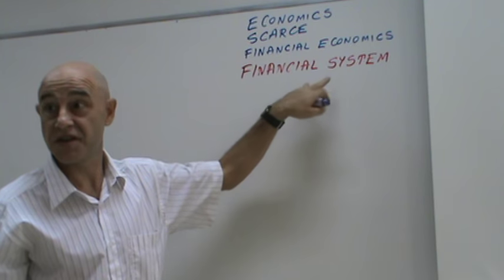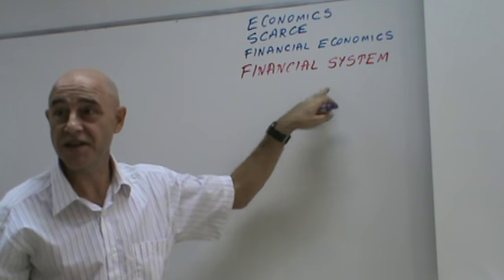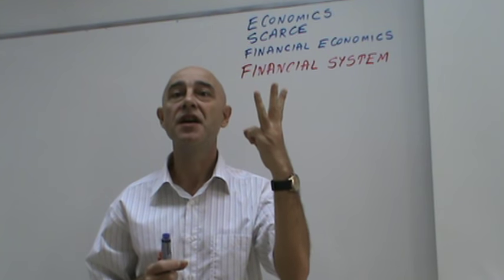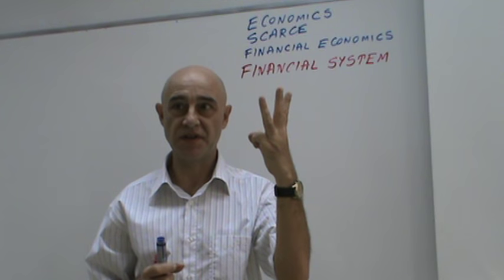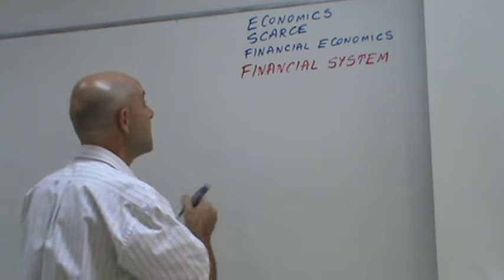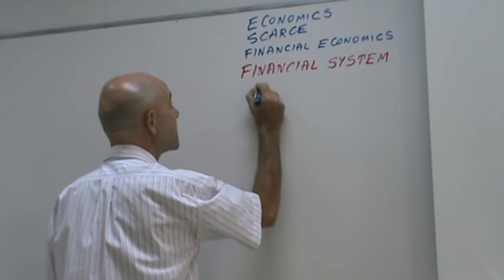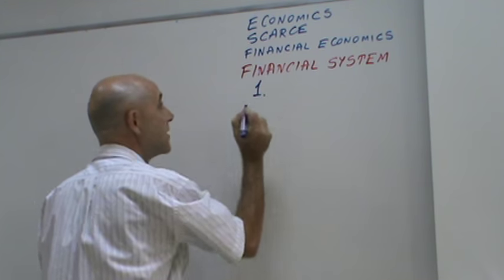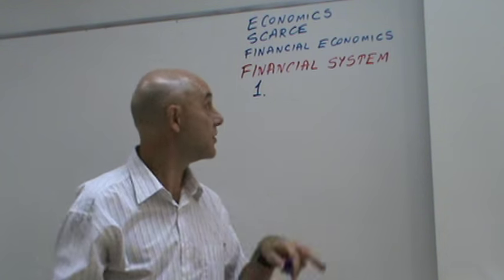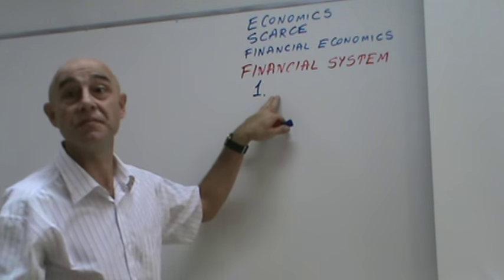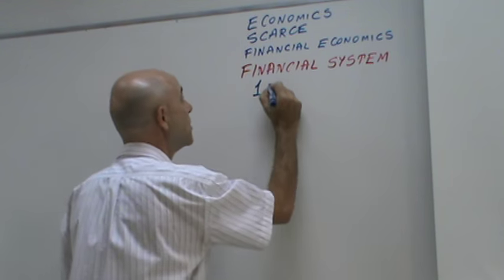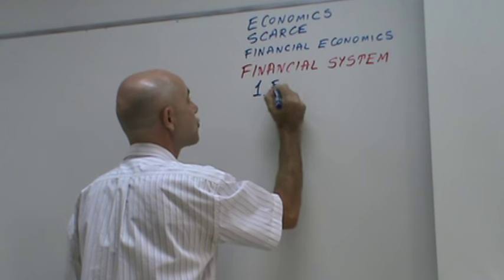The financial system has three elements. Number one: financial instruments.